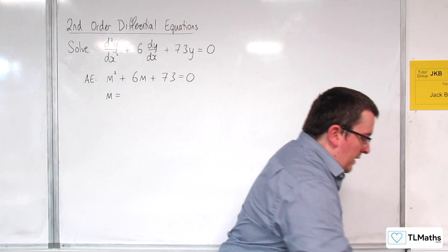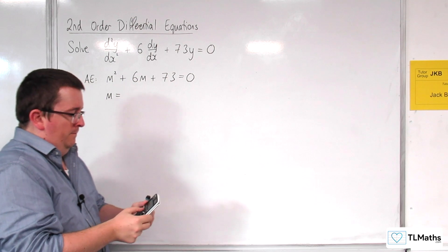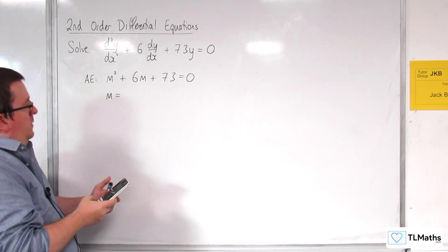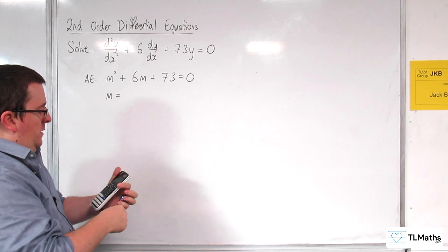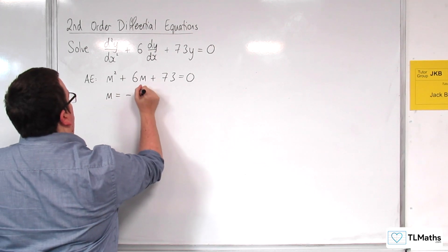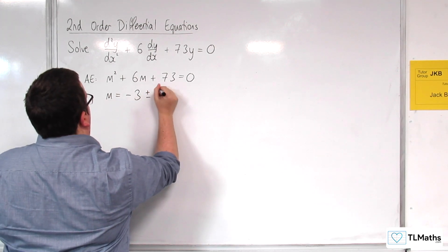So I'm going to put that into my quadratic solver. So 1, 6, and 73. So we get -3 ± 8i.